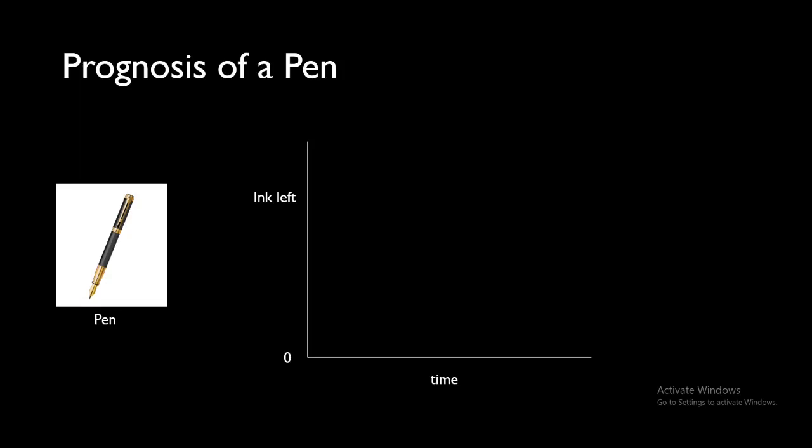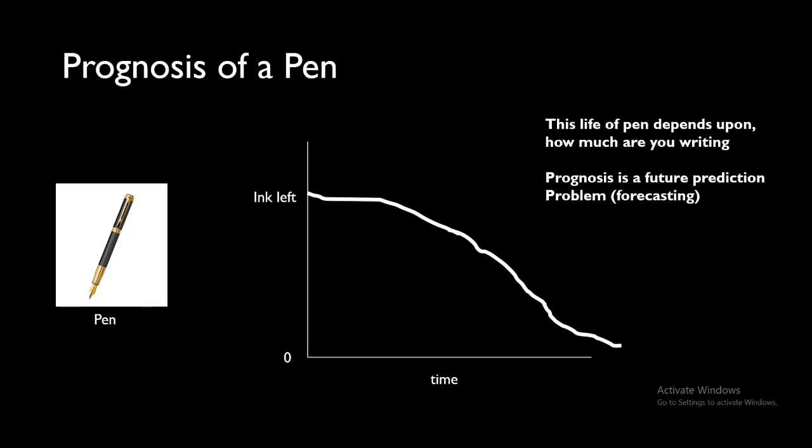The x-axis shows the time and the y-axis is the ink left. Of course at the starting the ink will be 100% and when we finish writing it will be 0%. For this particular pen we get a curve like this. We can clearly see that the life of this pen depends upon how much one writes. This is what we call prognosis.